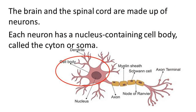The neuron is a specialized cell structure. Unlike the red blood cell, which is round or oval shaped, the nerve cell has a specialized structure. Each neuron has a nucleus-containing cell body called the cytone or soma. The cell body is round in shape, and the round part containing the nucleus is what we call the cell body — another name for it is cytone.